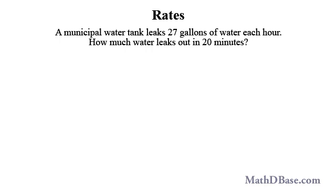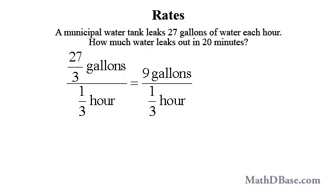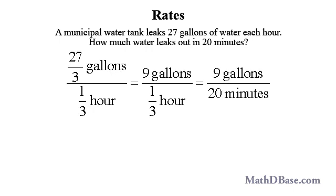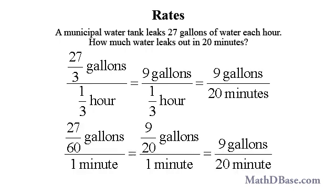To find the amount of water that leaks in 20 minutes, we can either divide the initial rate by 3, since 20 minutes is equal to 1/3 of an hour, to get 9 gallons in 20 minutes, or we can just look at the reduced fraction in the calculation of the amount of water leaked per minute.